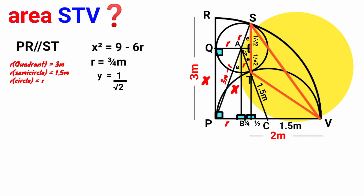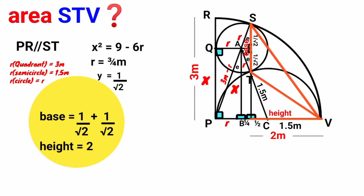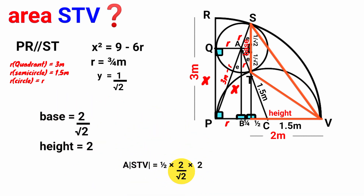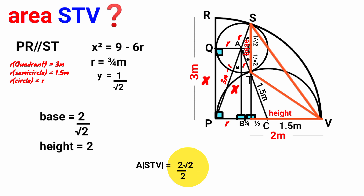Looking at triangle STV, taking this side as its base, the base equals 1/√2 + 1/√2 = 2/√2 meters, and the height equals 2 meters. Using the formula: Area = (1/2) × base × height = (1/2) × (2/√2) × 2 = 2/√2. Multiplying 2/√2 by √2/√2 gives 2√2/2 = √2. Therefore, the area of triangle STV equals √2 square meters.